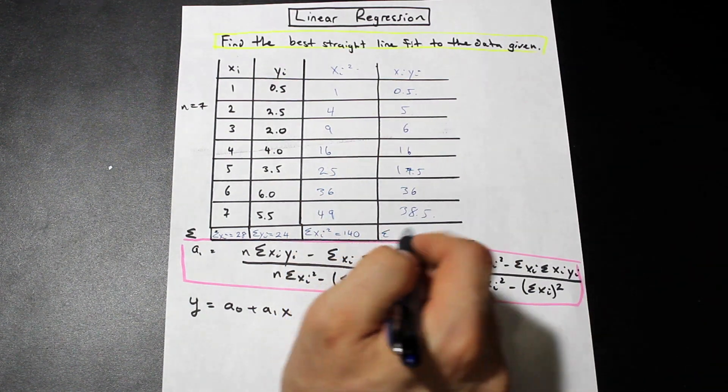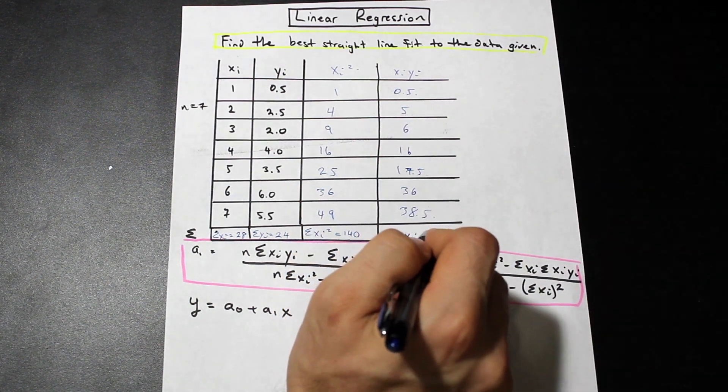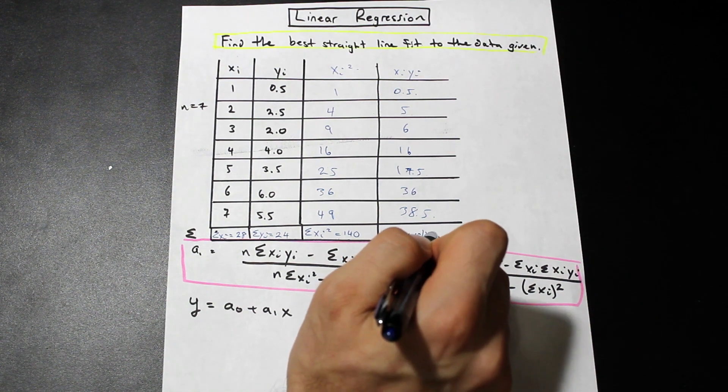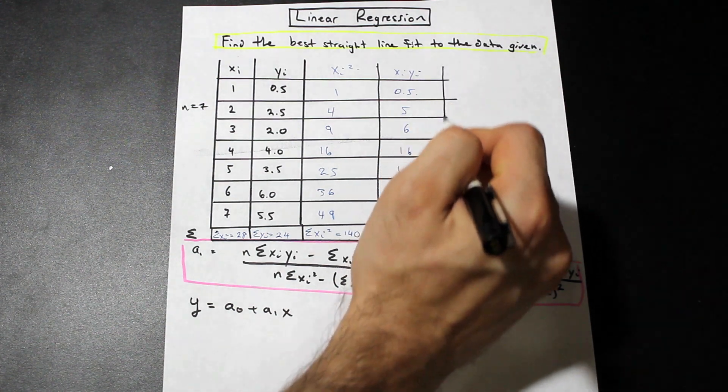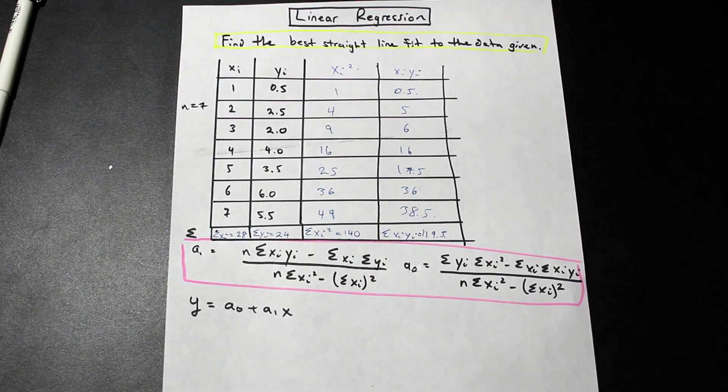The summation of all of these, summation of xi yi is equal to 119.5. Cool. So I think we have everything that we need to go ahead and start filling the formulas in.